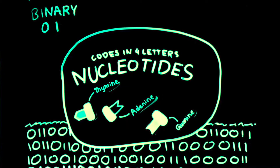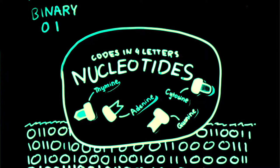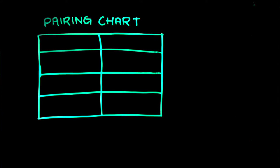Thymine, adenine, guanine, and cytosine, and it uses it to code for our different traits. These are called nucleotides, and they pair up like this.